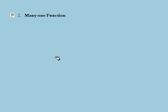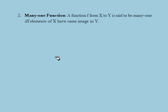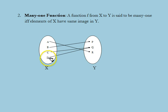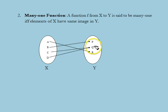Next we discuss the many-to-one function. A function f from x to y is called many-to-one if and only if two or more elements of x have the same image in y — in other words, if and only if it is not one-to-one. In this example, x contains elements a, b, c, d and y contains elements p, q, r. We note that c and d have the same image q, thus this function represents a many-to-one function.